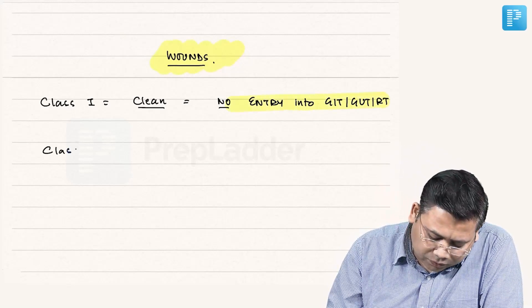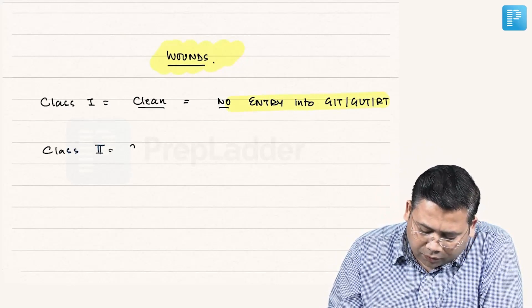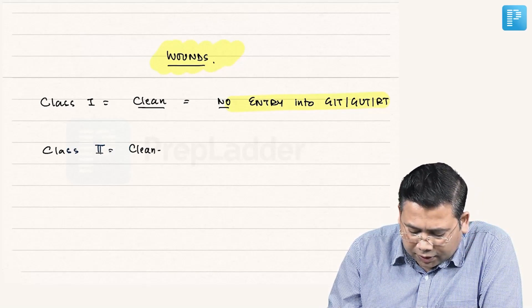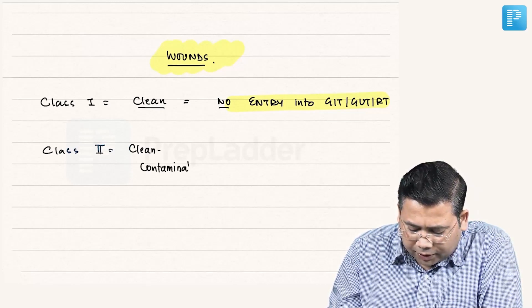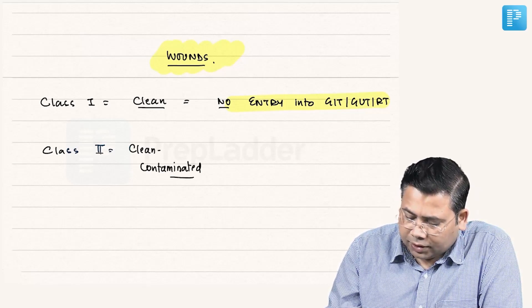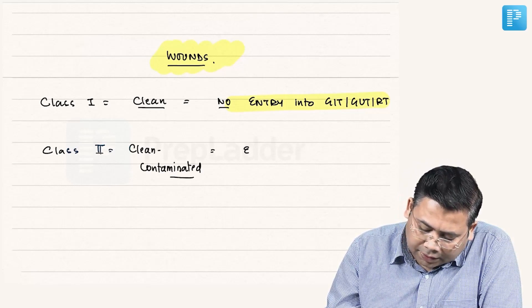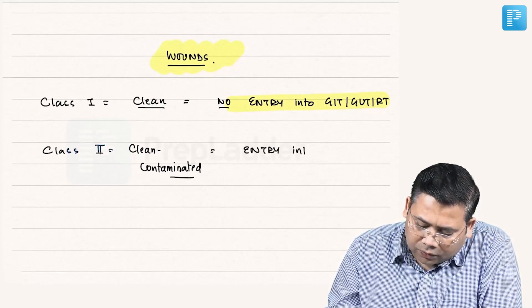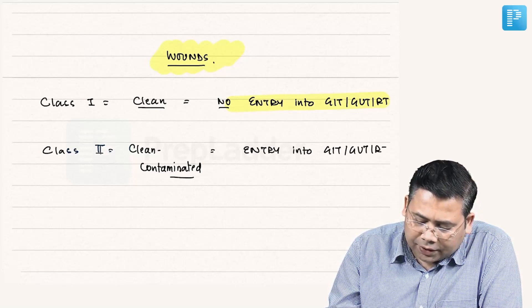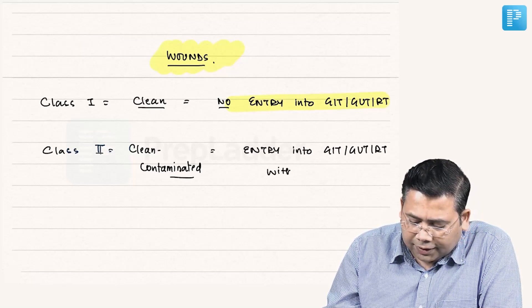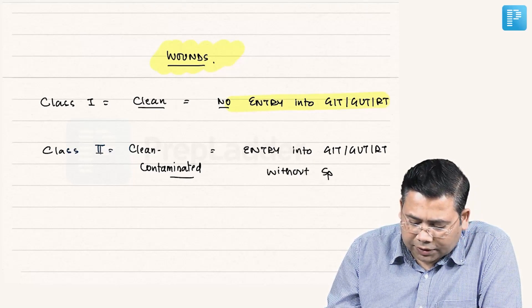Then we have Class 2. When we talk about Class 2, this is clean contaminated. What do you mean by these wounds? There is entry into GIT, GUT, respiratory tract without any spillage.